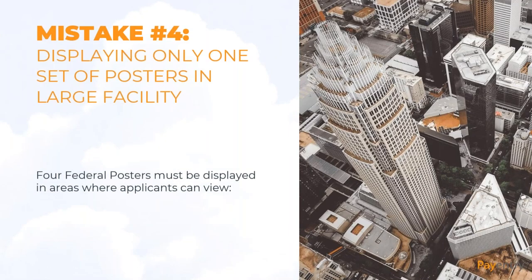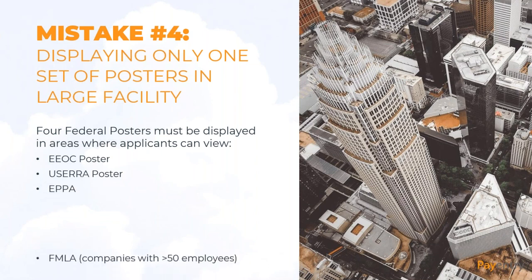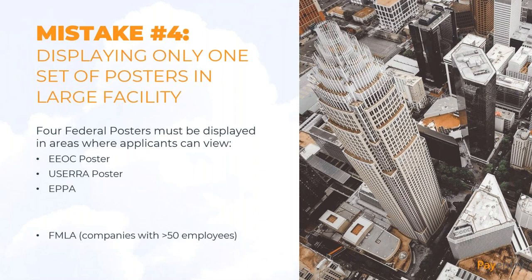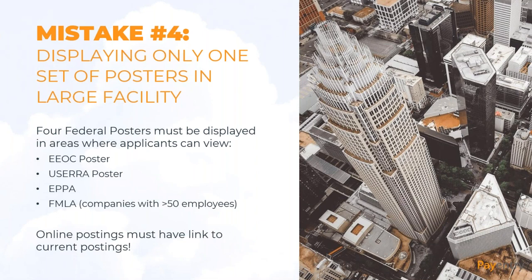There are four federal posters that must be displayed where applicants can view them, not just employees: the EEOC poster, the USERA poster, the Polygraph Protection Act poster, and FMLA — if you have more than 50 employees within a 75-mile radius. Online postings must also have a link to your current labor law postings so that applicants can see what their rights are.